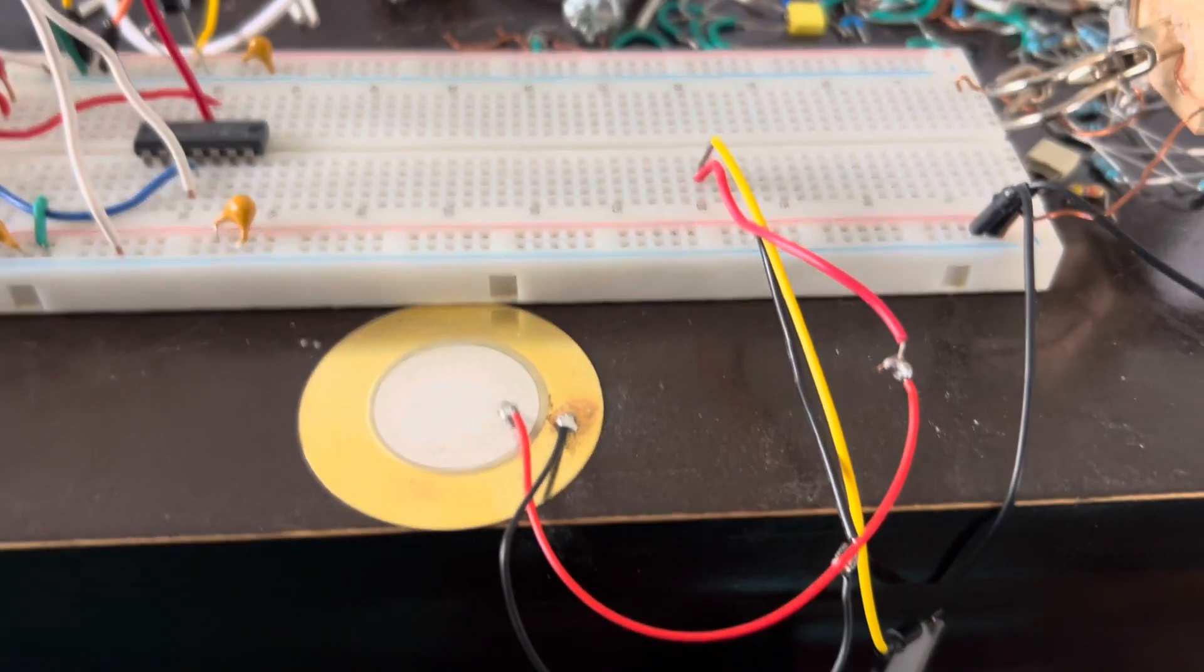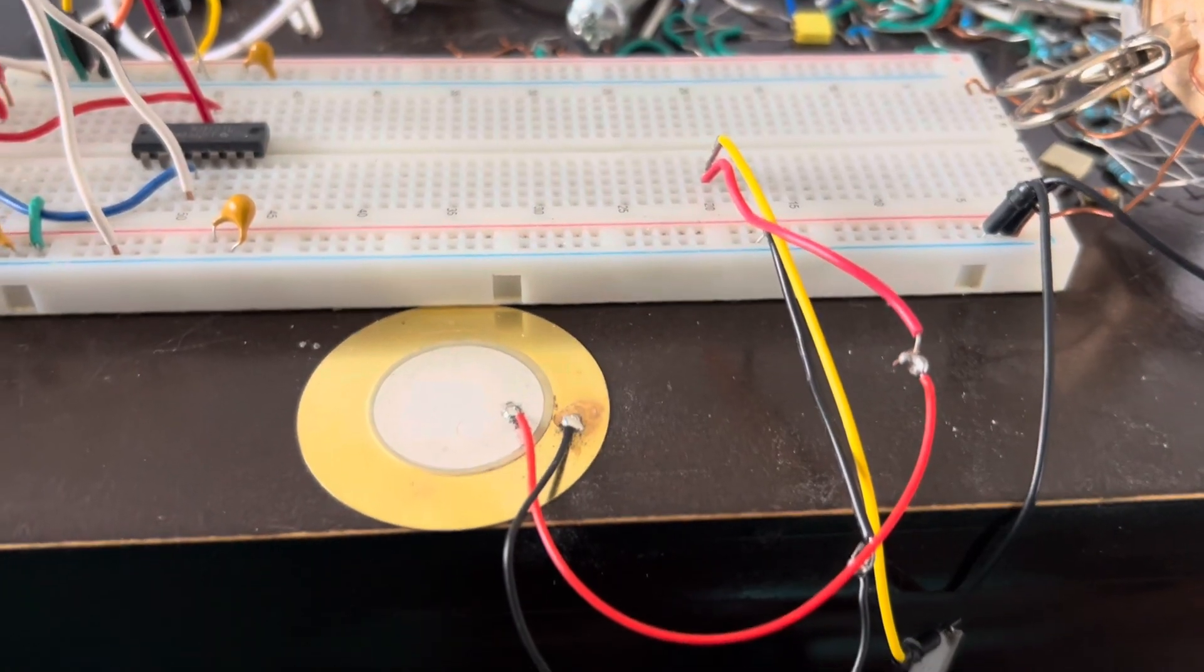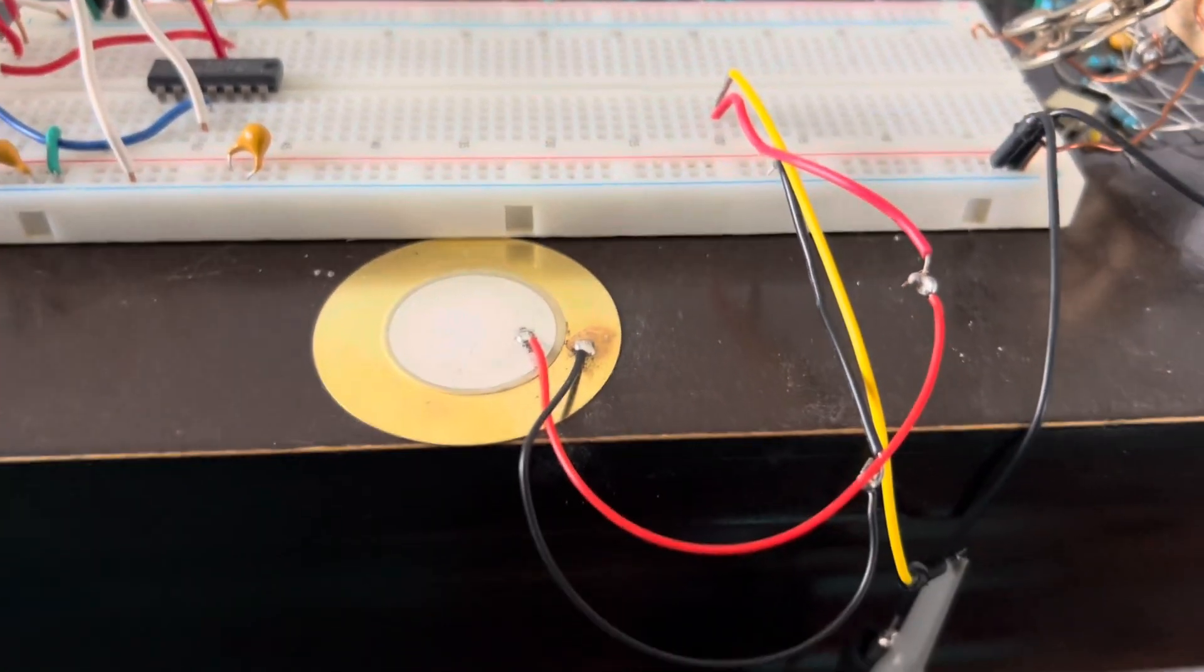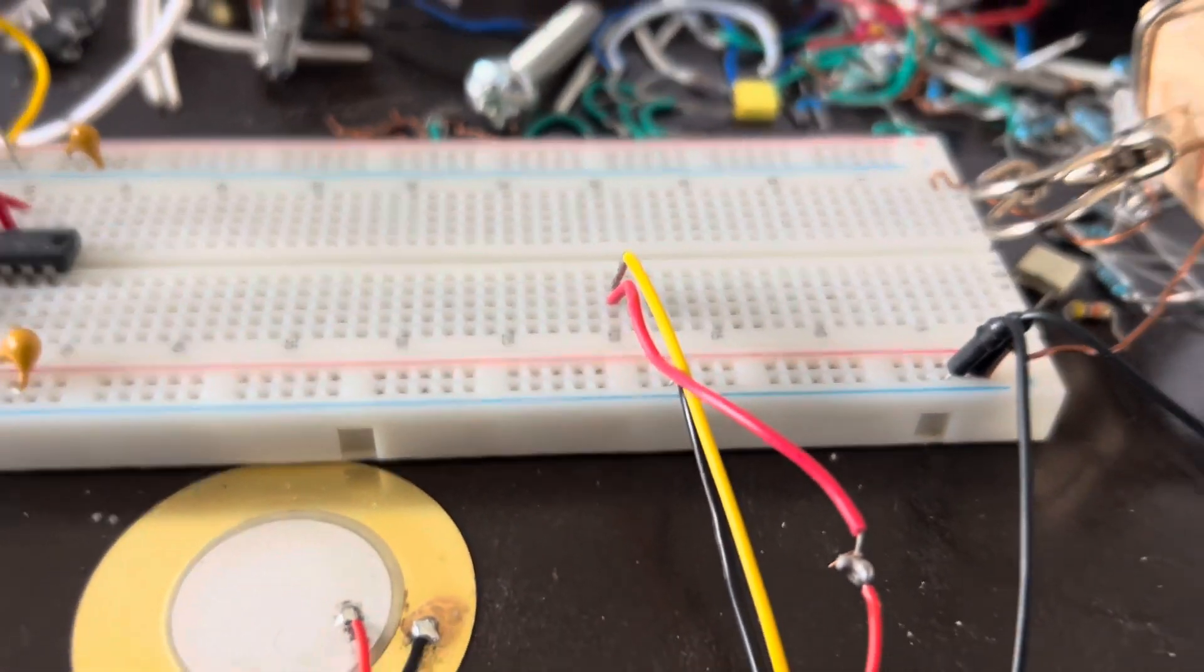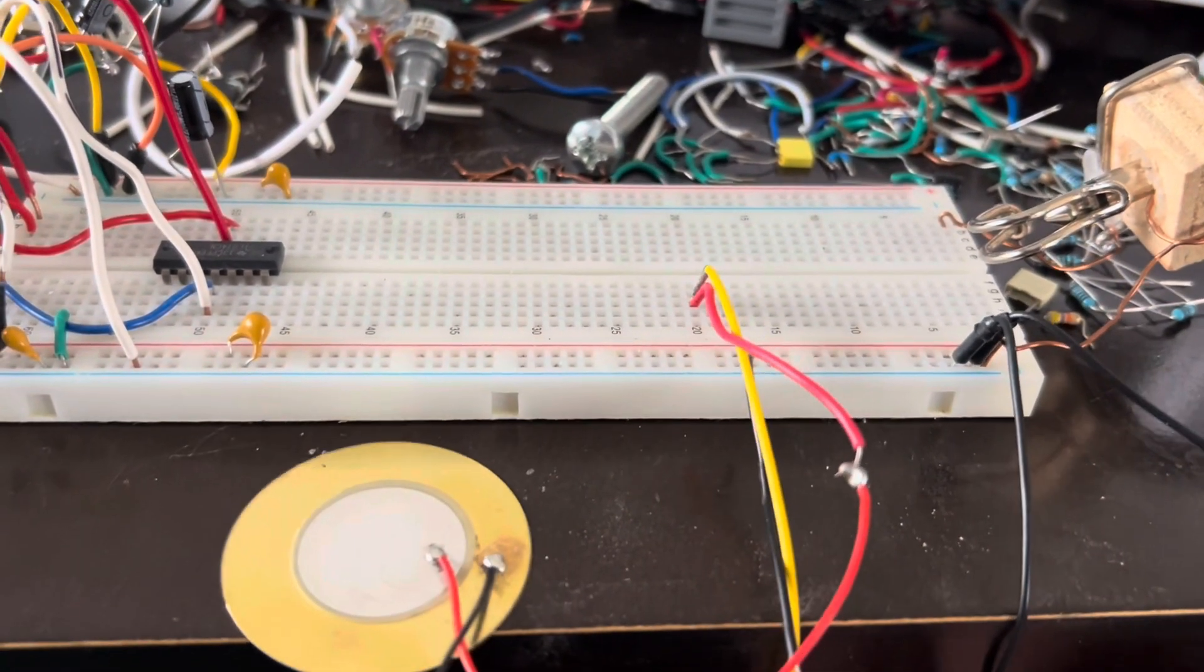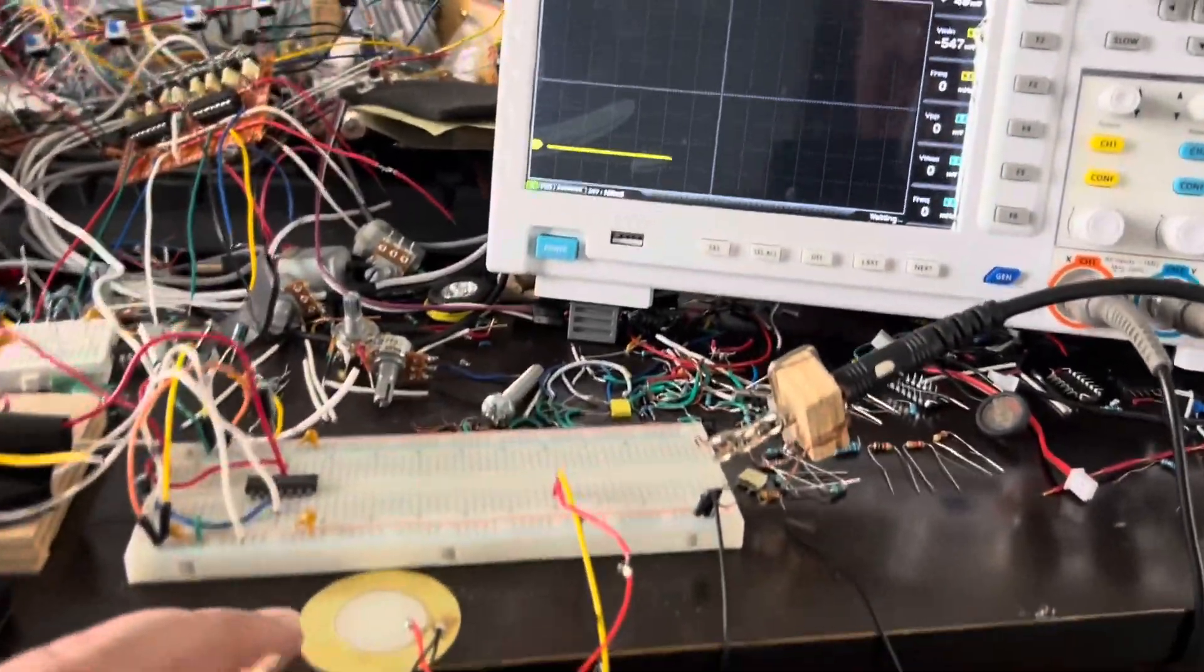So back to basics here. We have our piezo pickup here and basically the power is off and it's just going to the oscilloscope probe which is the yellow wire here and let's see what it looks like when I tap on it.